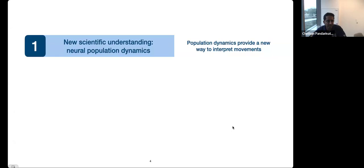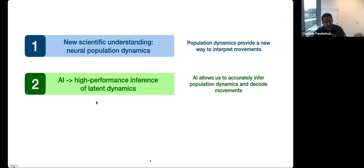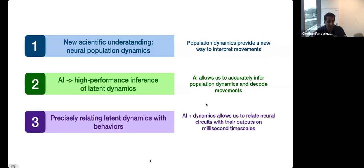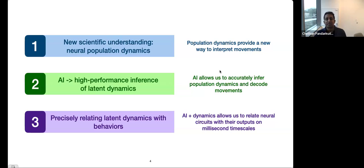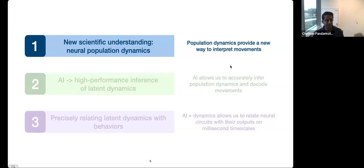At a high level, I'll discuss a scientific understanding of neural population activity that has emerged especially in the last 10 to 15 years. Then I'll show how AI and machine learning methods allow us to precisely infer the dynamics of large neural populations. Finally, I'll show applications of that in data taken from the mammalian spinal cord, which is a key opportunity to really test how precise our models of neural population dynamics really are.